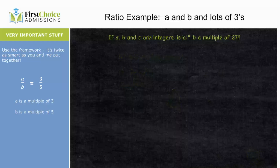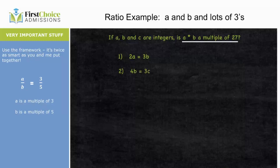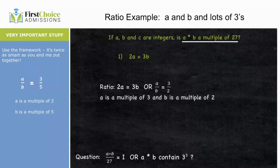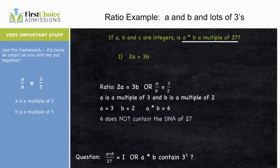New question: if a, b, and c are integers, is a times b a multiple of 27? That's asking whether a×b contains at least three factors of 3. Statement 1: 2a equals 3b, which as a ratio is a over b equals 3 over 2, so a is a multiple of 3 and b is a multiple of 2. If a=3 and b=2, then a×b=6, which is not a multiple of 27.